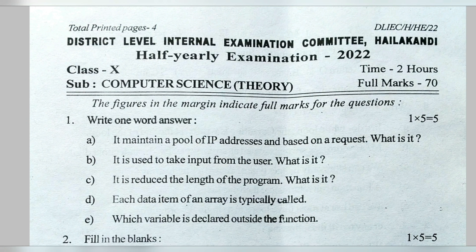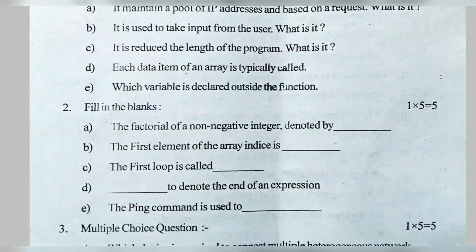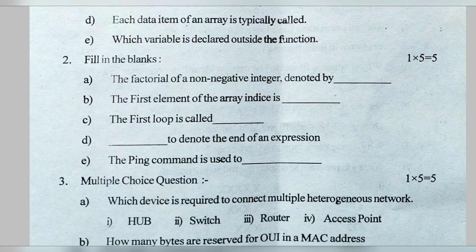It reduces the length of a program — what is it? It is a loop. A data item of an array is typically called an element. For (e): which variable is declared outside the function? It is a global variable.